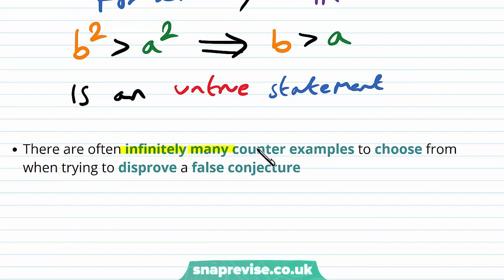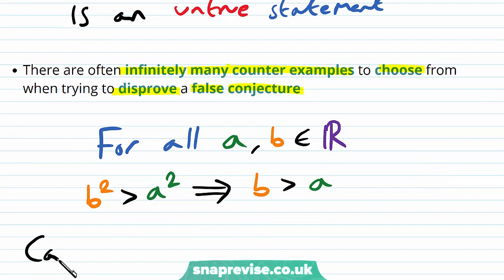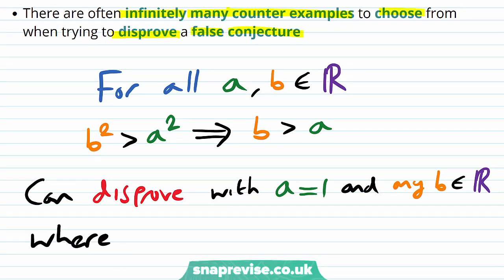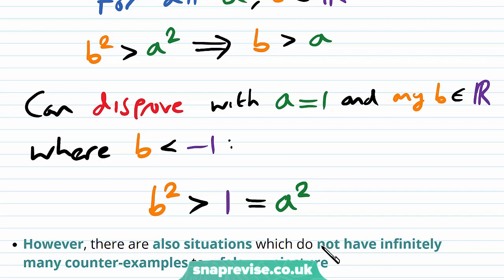There are often infinitely many counterexamples to choose from when trying to disprove a false conjecture. For the same conjecture — for all a, b in the real numbers, b squared greater than a squared implies b greater than a — we are able to disprove this with, for example, a equal to 1 and any b in the real numbers so long as b is strictly less than minus 1, because then b squared will be strictly greater than 1. For any number b less than minus 1, say minus 1.5, minus 1.1, minus 100 and so on, b squared will be strictly greater than 1, which equals a squared. So b squared will be greater than a squared, but b will be less than a. This gives us infinitely many counterexamples to choose from.